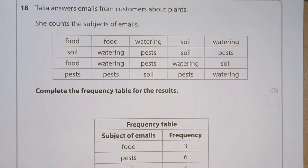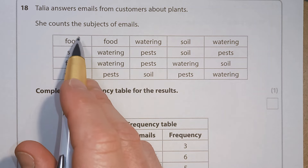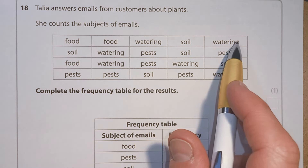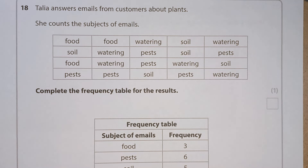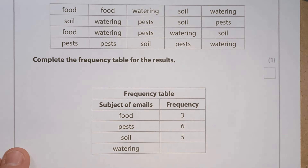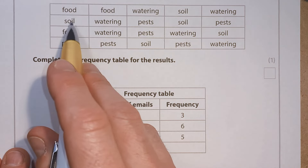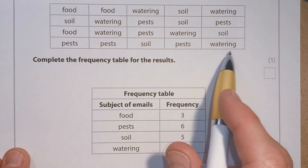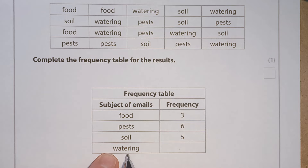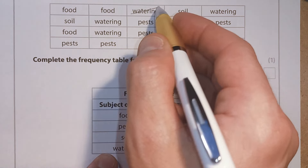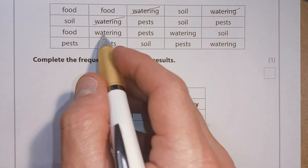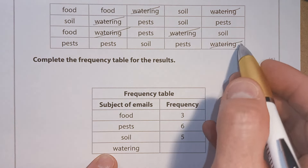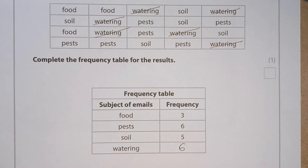Question 18. Talia answers emails from customers about plants and counts the subjects. Complete the frequency table for the results. Some categories are already filled in — there are three emails about food. We just need to fill in the last one: counting the watering emails — one, two, three, four, five, six. The answer is six.